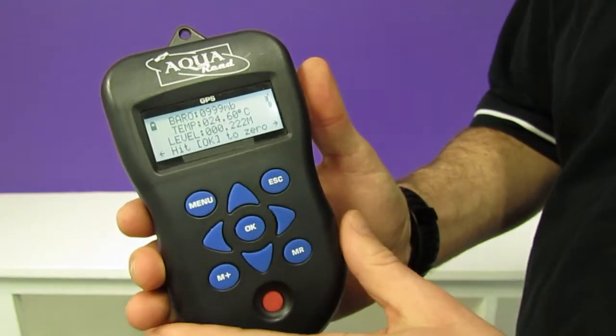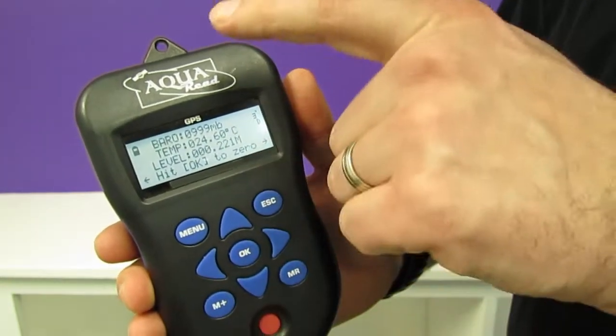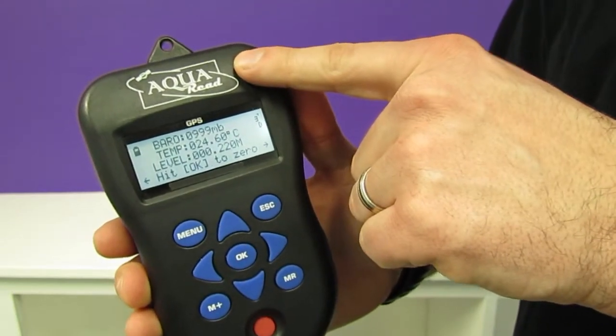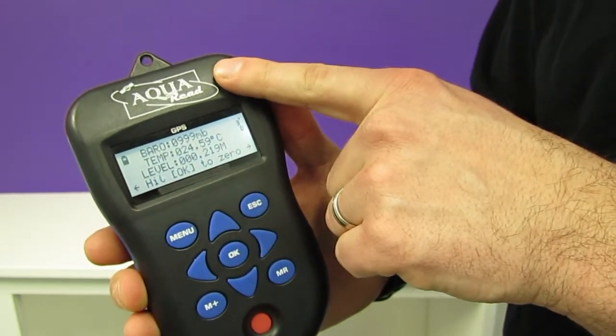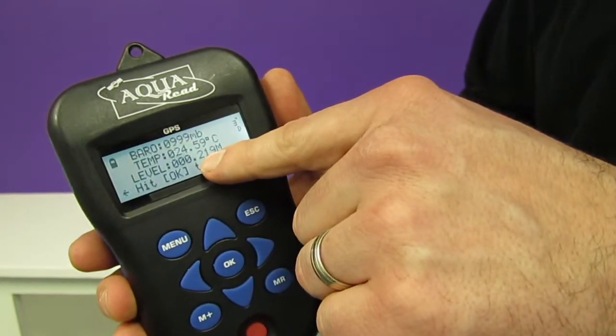On the screen you can see that we are recording the barometric pressure. That is coming from the barometric sensor which is built into the level line meter. Then we can see the temperature and also the level.